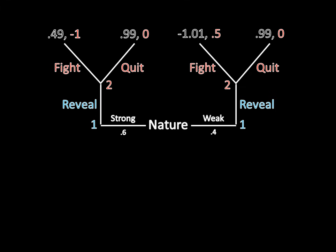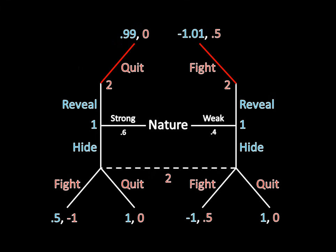Now we can take that information and simplify our original game tree. I'm going to actually highlight the strategies in deep colors, because this is going to get complicated, and having that visualization will really help us out here. I've also deleted the other information, because we don't need it — Player 2 would never take those other strategies.